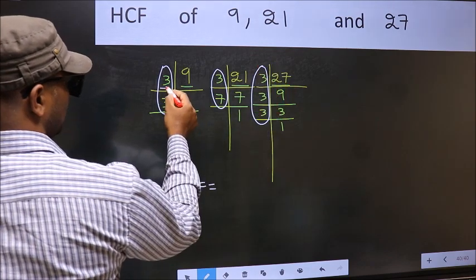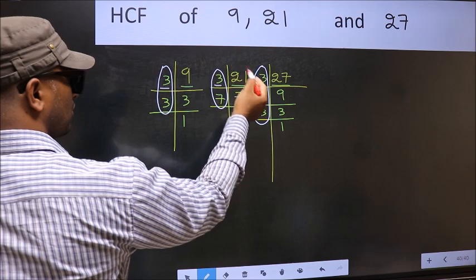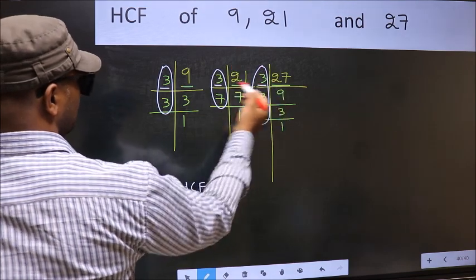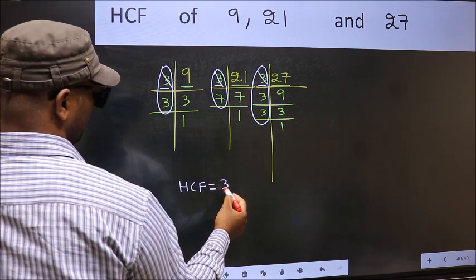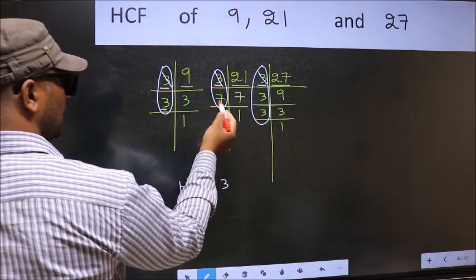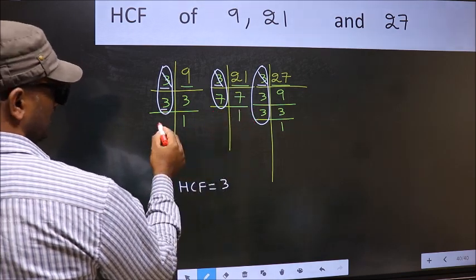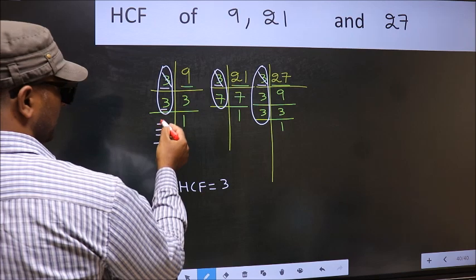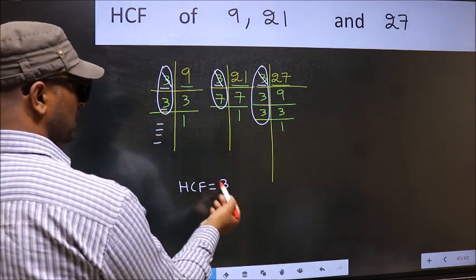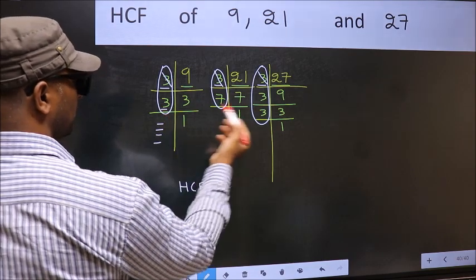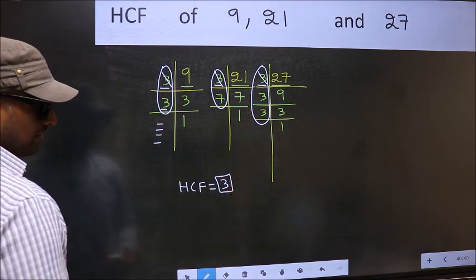Starting with the number 3: do we have 3 here? Yes. Go to the next place, do we have 3 here? Yes. So cut 3 right here. Next number 3: do we have 3 here? No. So no need to check in the other place. No more numbers left out. Therefore, we got only one number, 3, present in all three places. So 3 itself is our HCF.